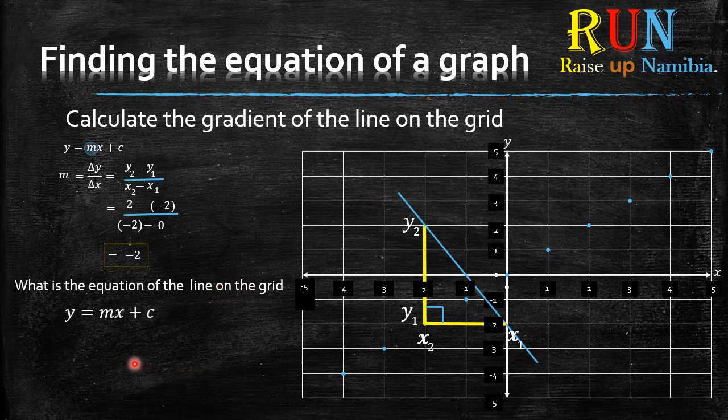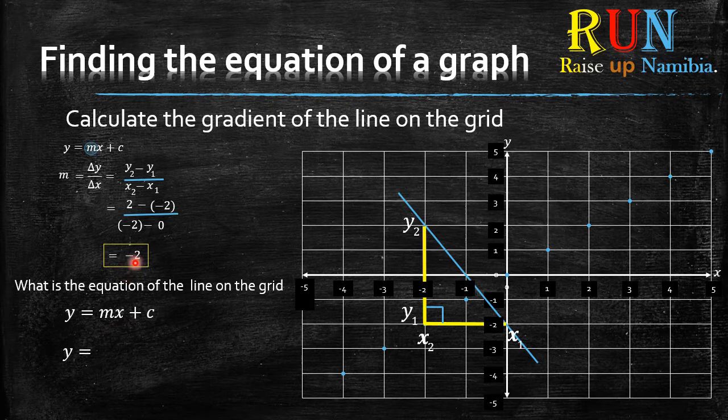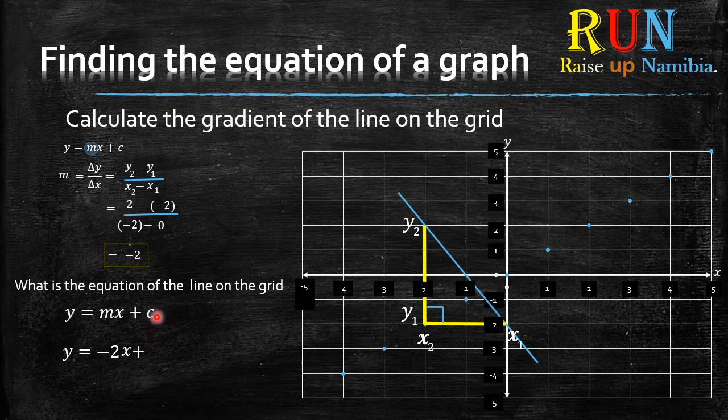Again, bring out your y = mx + c and then focus on m and c. What is your m? Your m is your gradient, so it will be negative two. Then you put your x plus c.